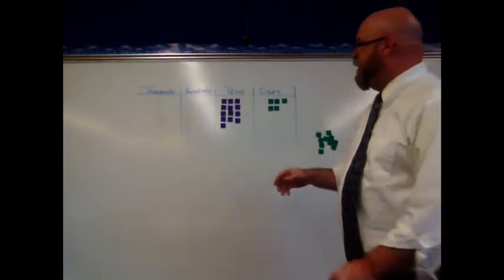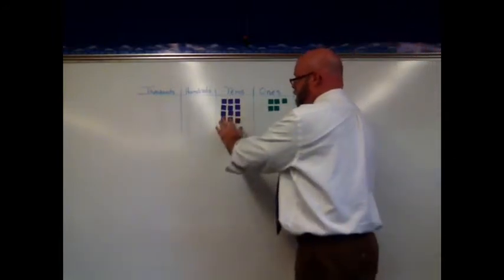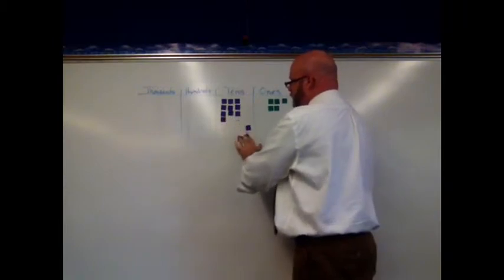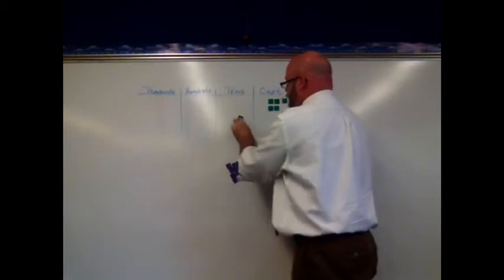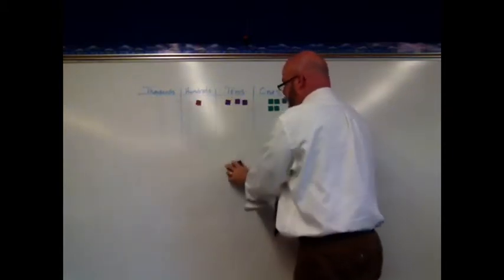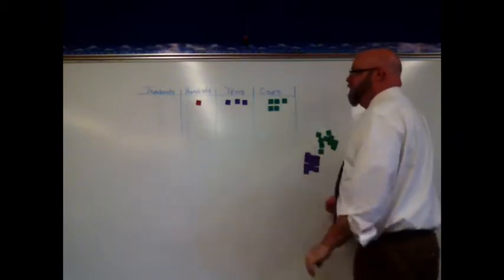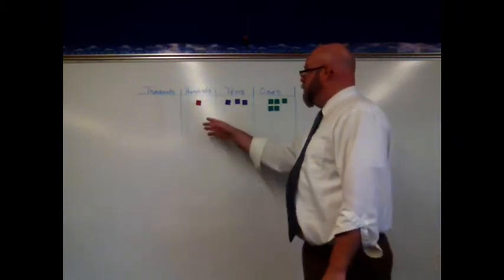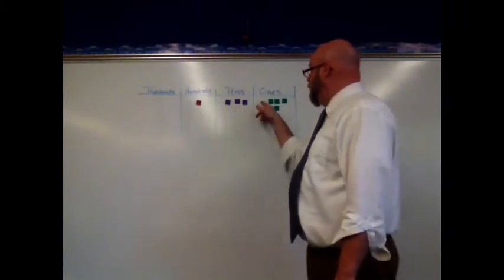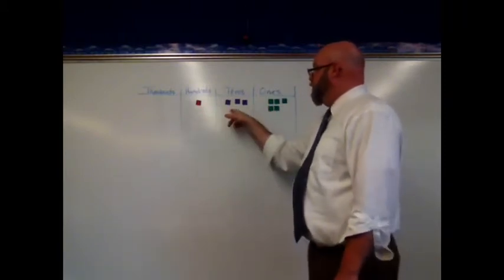But again, we can take ten of these tens and exchange them for one hundred. So it leaves us with three tens and one hundred. So 45 times three would be one hundred, thirty, or three tens, five ones. One hundred thirty-five.